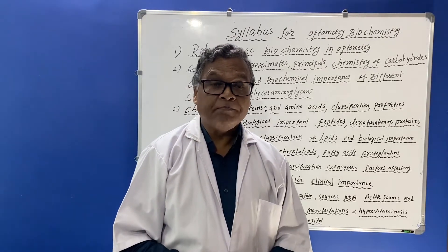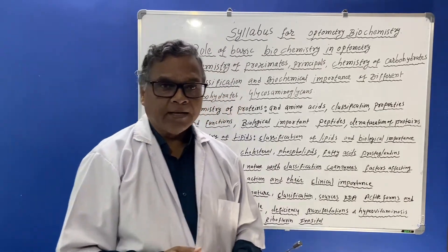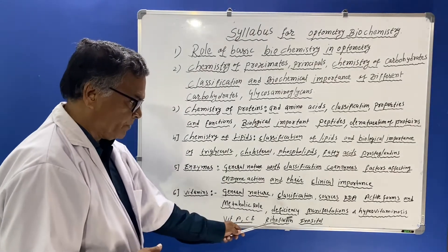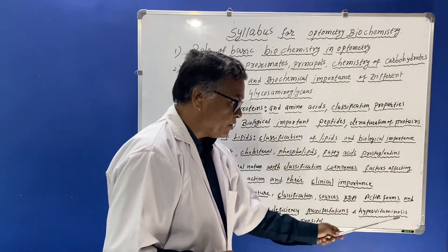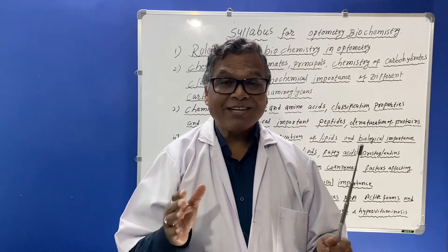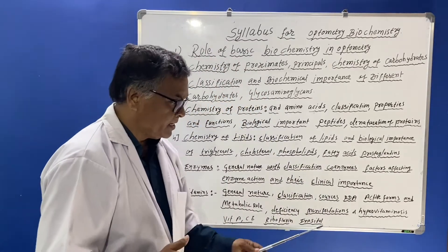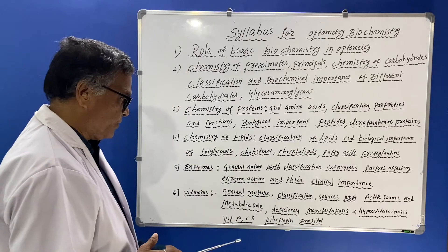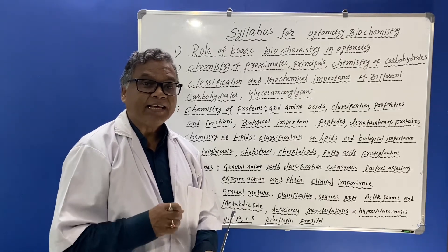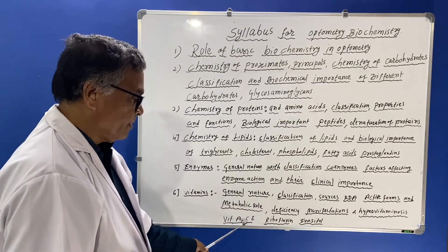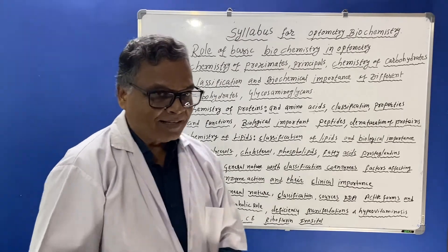For example, thiamine, known as vitamin B1, is a water-soluble vitamin. If it is lacking in the body, a deficiency disease is caused. Therefore, deficiency manifestation is important to learn. Hypervitaminosis — when vitamin amounts are increased in the body — and its effects are also to be learned. Important vitamins include vitamin A (retinol), vitamin C, vitamin E, riboflavin, and inositol.